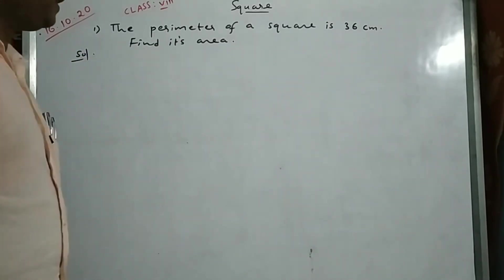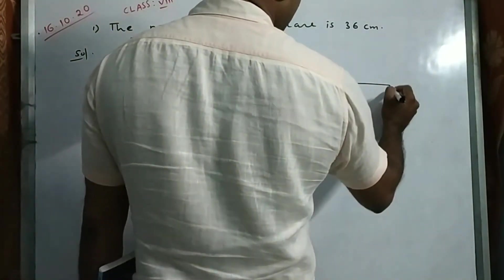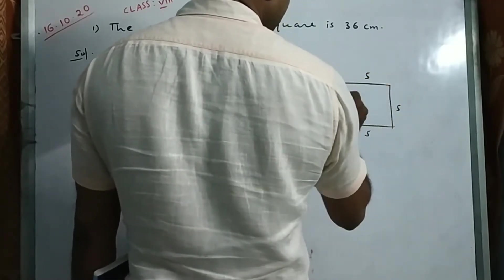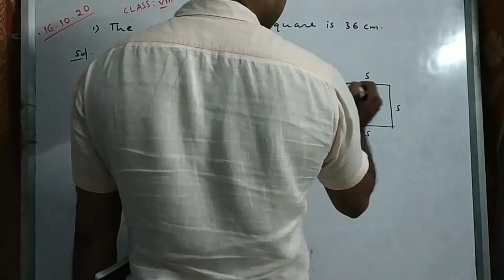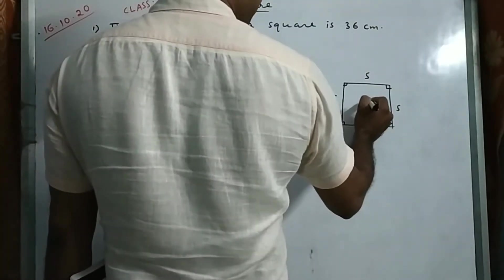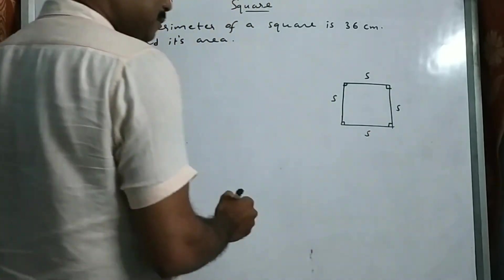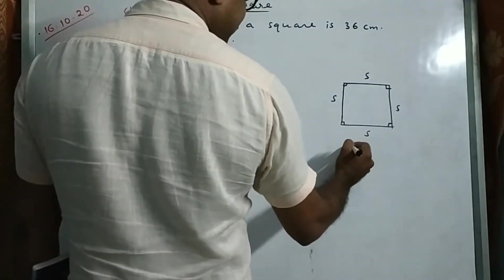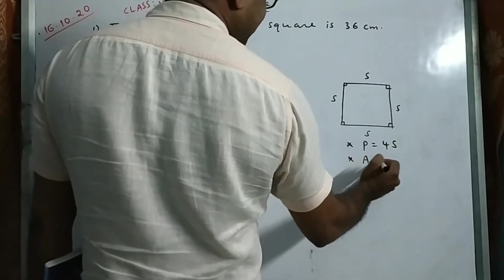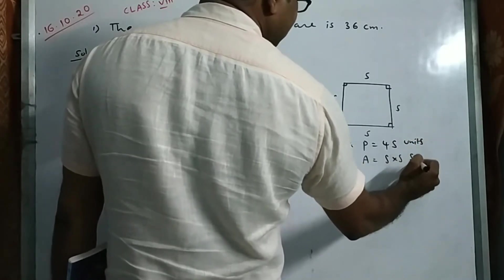What is the perimeter of a square? A square is a quadrilateral in which all sides are equal and each angle is 90 degrees. The perimeter is 4 times S — that is, S plus S plus S plus S. And the area is side into side, measured in square units.